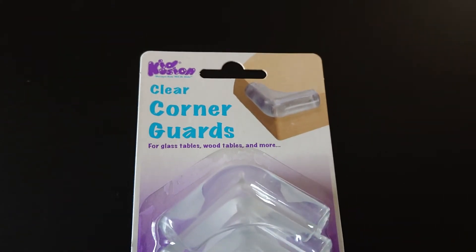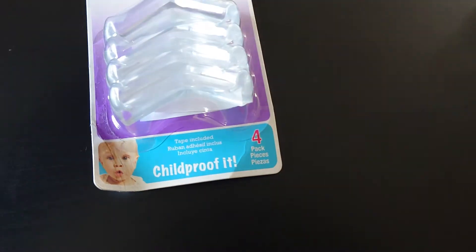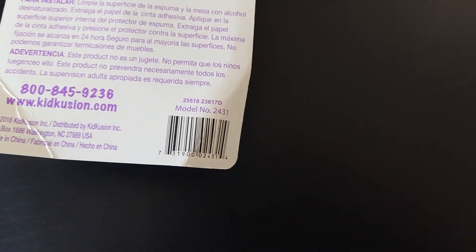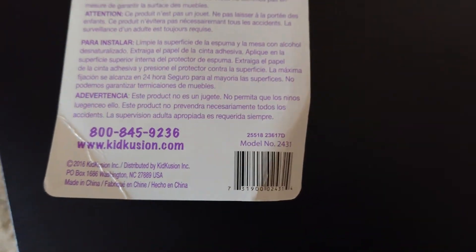Again, just keep in mind this is for KidCushion clear corner guards for glass tables, wood tables, and more. Childproof it. Four pieces, model number 2431. You can see the website. It's made in China, and here's the barcode.